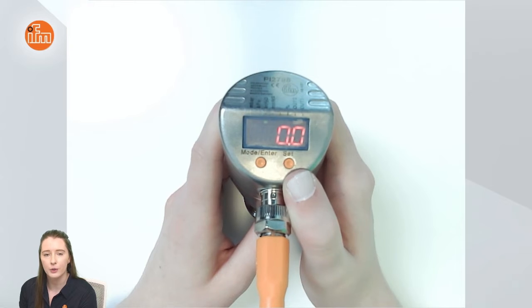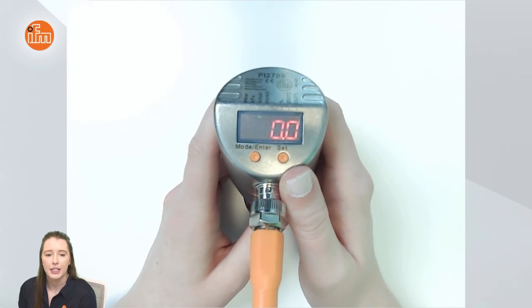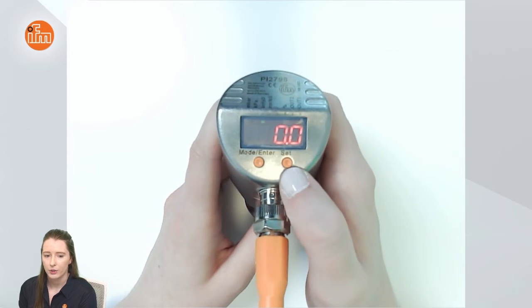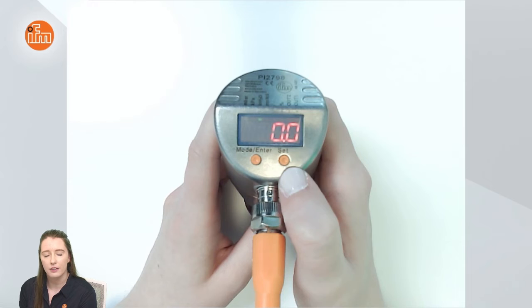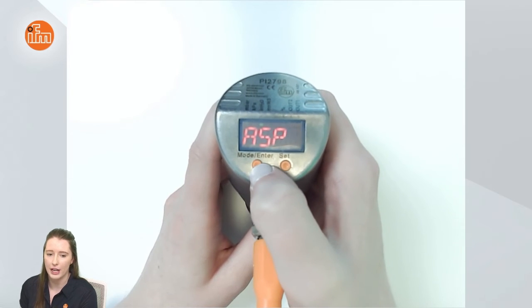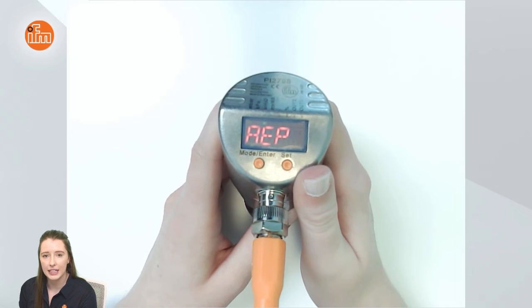It is factory set for zero meaning your four milliamp output would be representing zero inches of water column. Again you would change this by holding down the set button and then when you're at the value you want to set it for you'd press mode enter and then if you press mode enter again you'll see aep for analog endpoint.